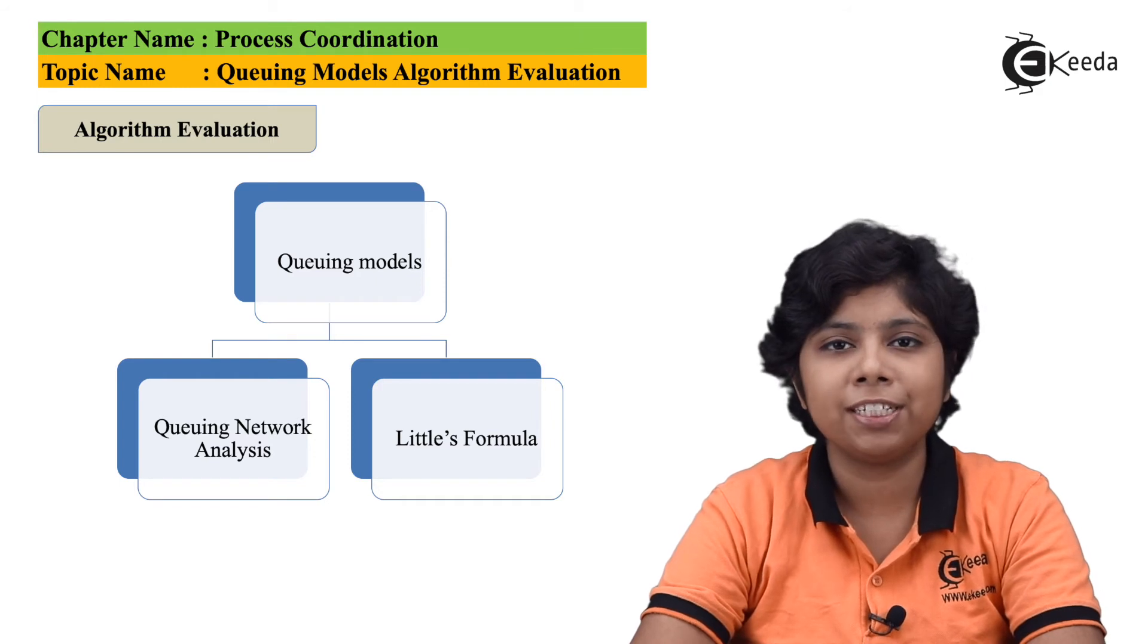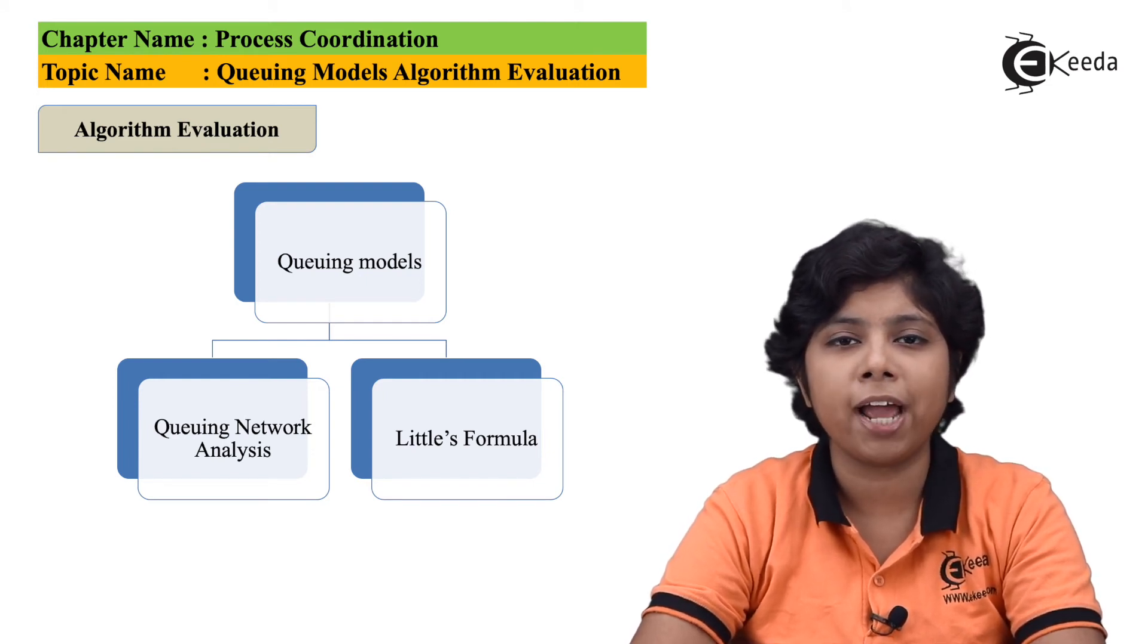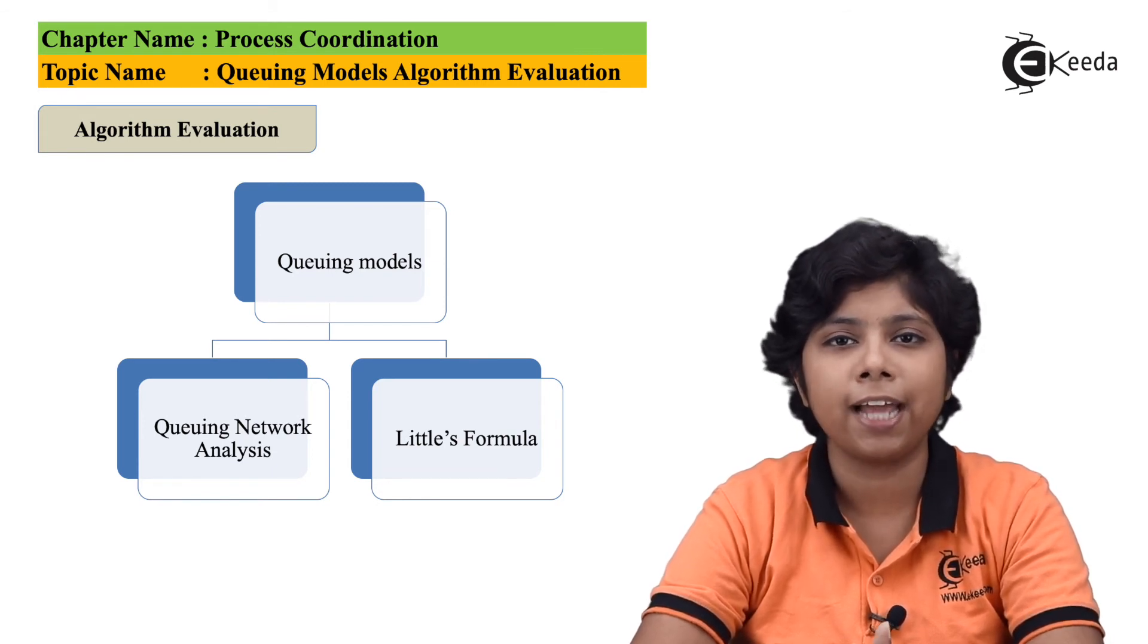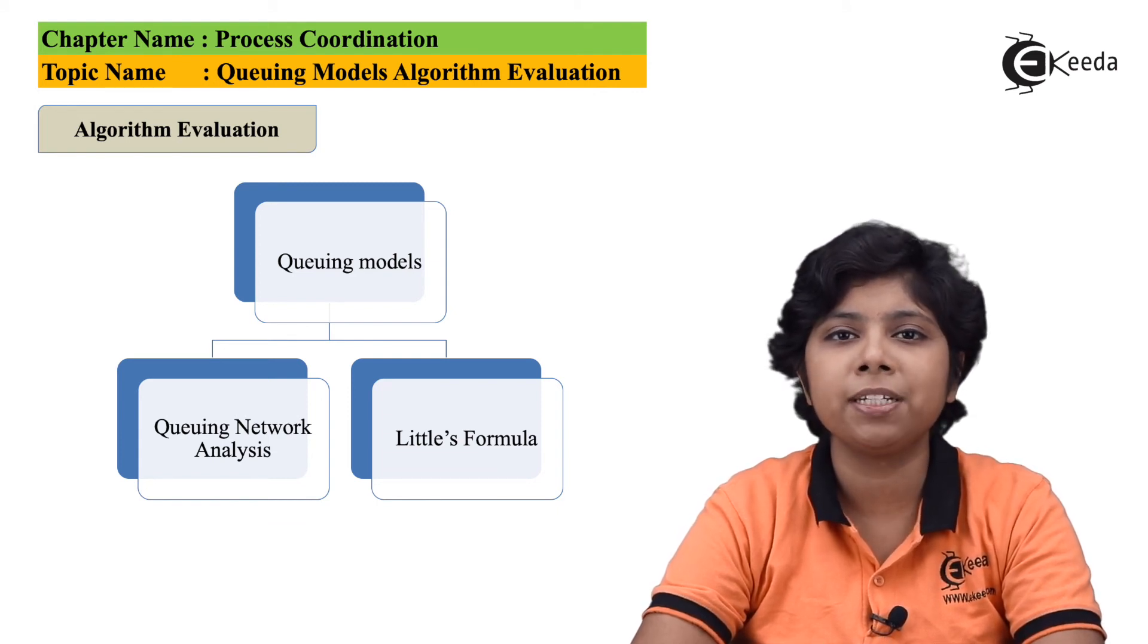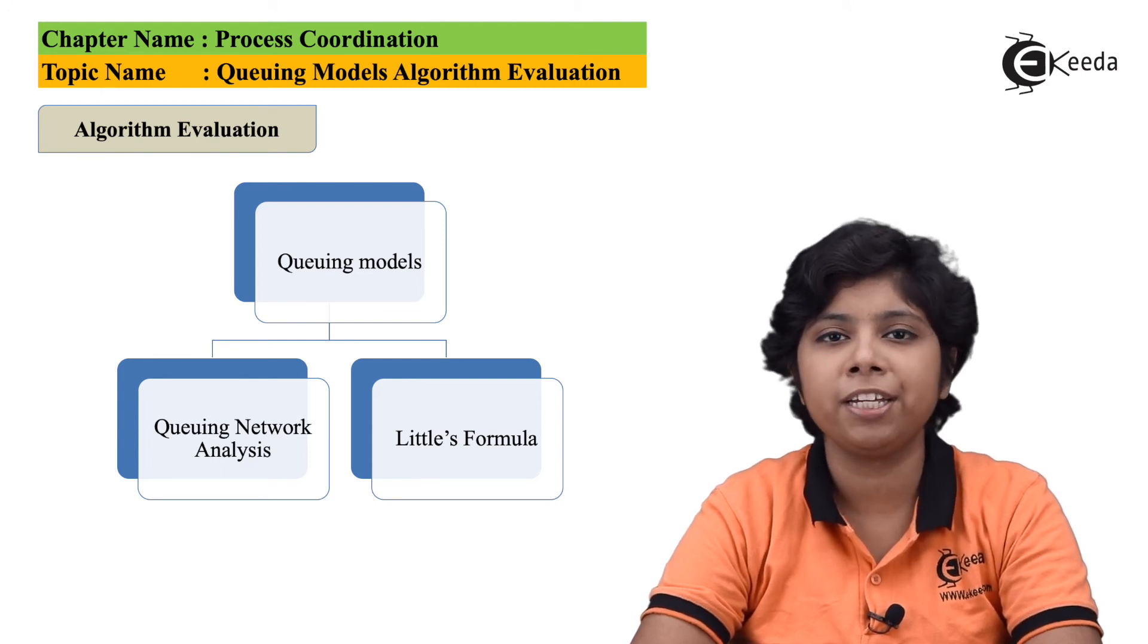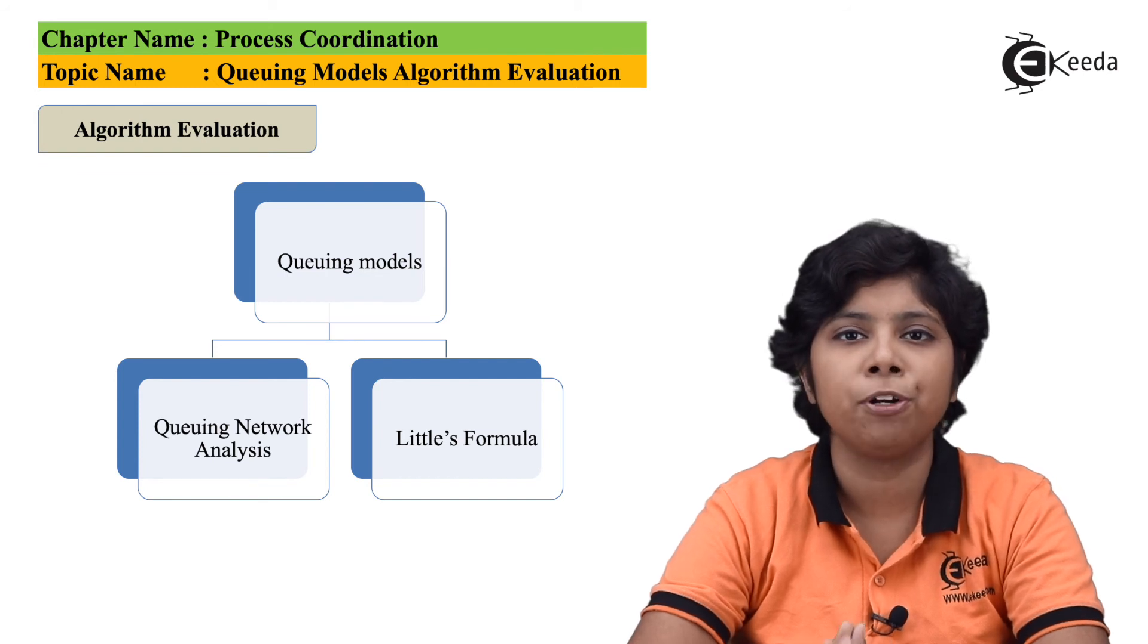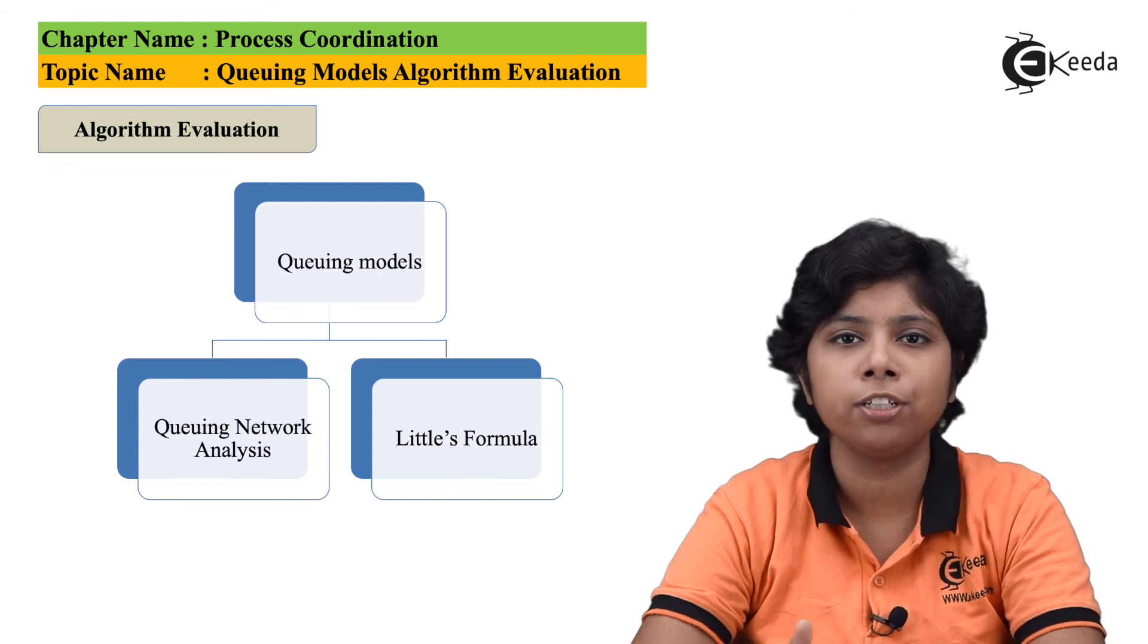For these difficulties, queuing models are often an approximation of a system. Now, the actual accurate result can be deferred and mean questionable state when you are using this queuing modeling of selecting algorithms. Suppose we have to take a number of independent inputs that are assumptions only, which can be inaccurate too. So, on the basis of these assumptions, the results are produced, so this can be accurate or inaccurate according to the assumptions.